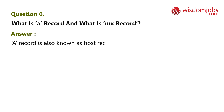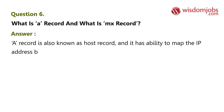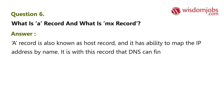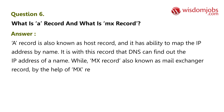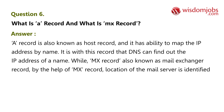Question 6: What is an A record and what is an MX record? An A record is also known as a host record and it has the ability to map an IP address by name. It is with this record that DNS can find out the IP address of a name. An MX record, also known as a Mail Exchanger record, is used to identify the location of the mail server, and it is also found in DNS.